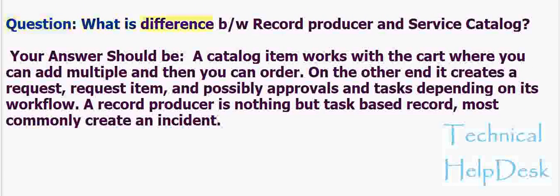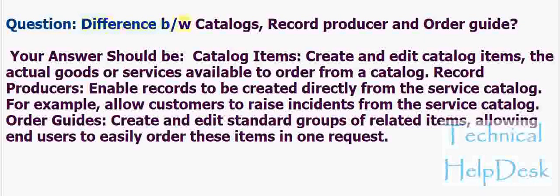Question: What is the difference between a record producer and a service catalog item? A catalog item works with the cart, where you can add multiple items and then order them. It creates a request, request item, and possibly approvals and tasks depending on its workflow. A record producer is task-based and most commonly creates an incident.